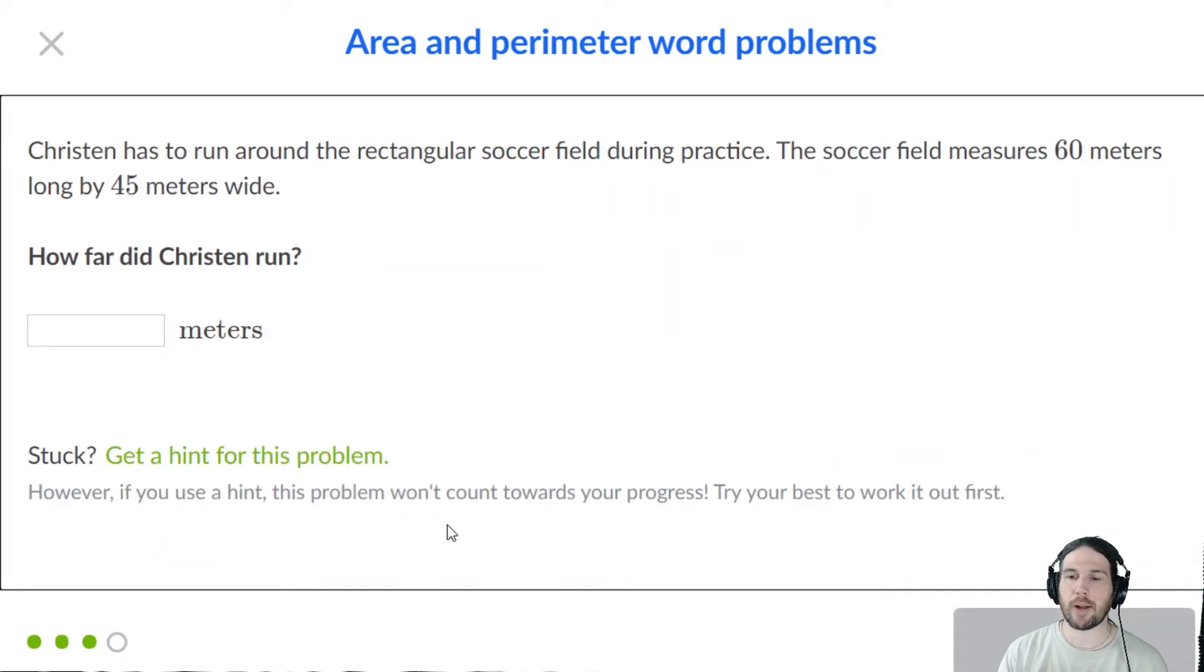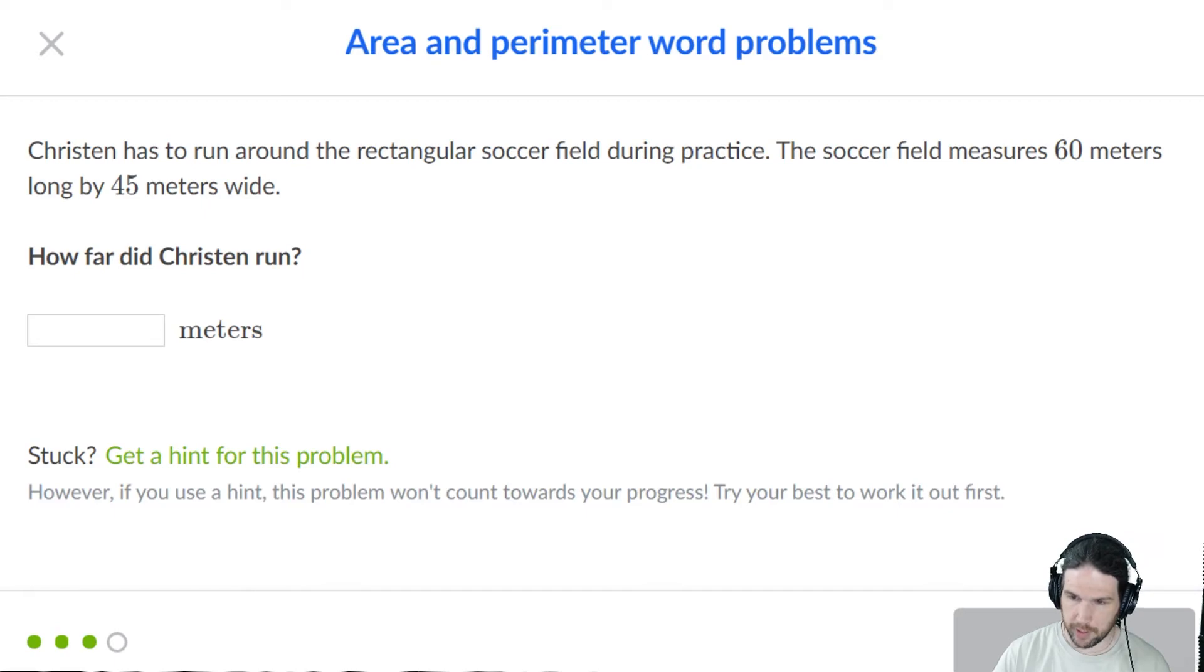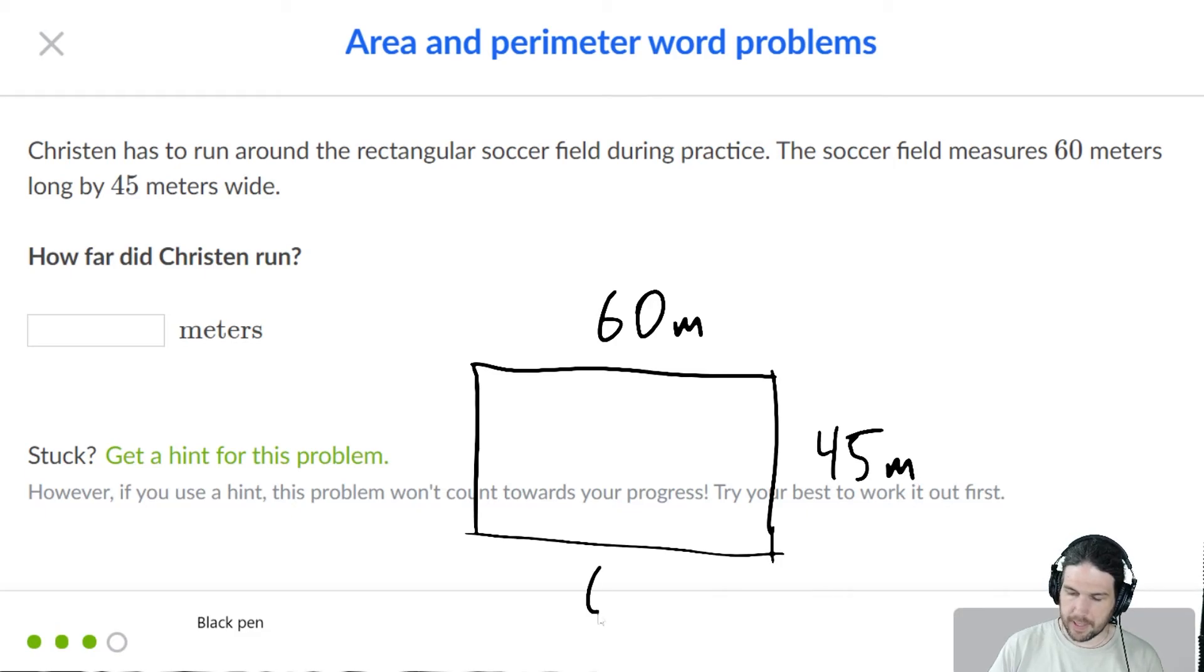Kristen has to run around a rectangular soccer field. I'm drawing it already. Draw a diagram, do it, do it, do it. 60 meters long by 45 meters wide. That makes this 60 and this 45. Is that visible? It is. It's not great, but it's visible.